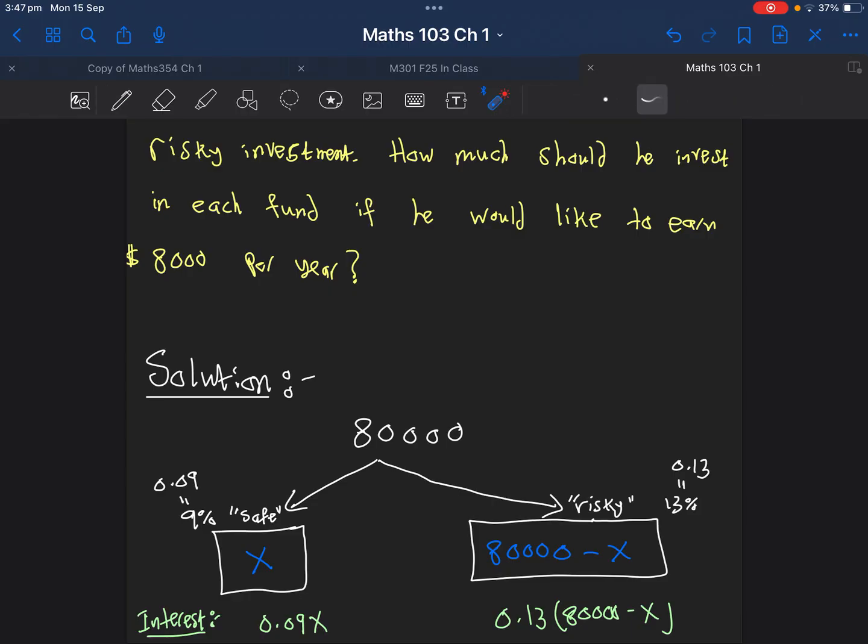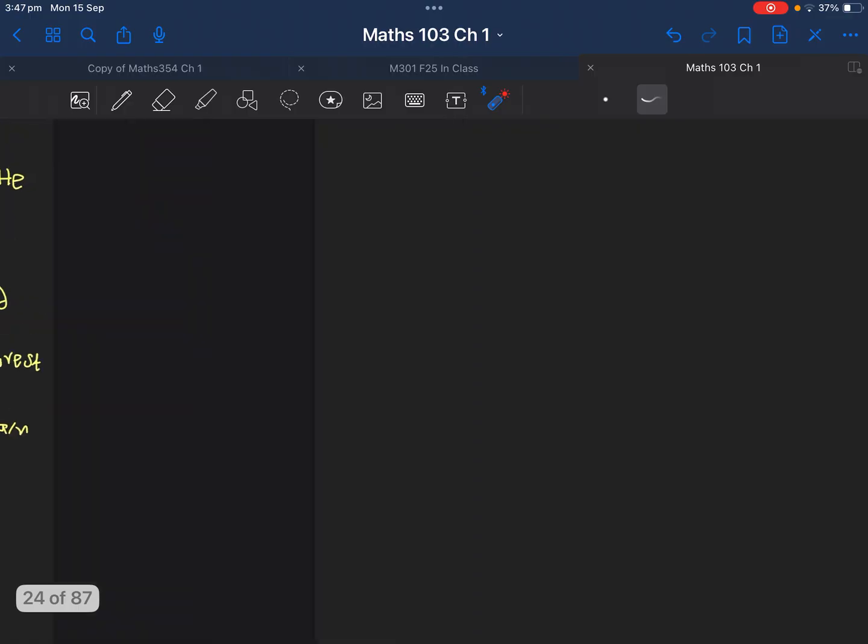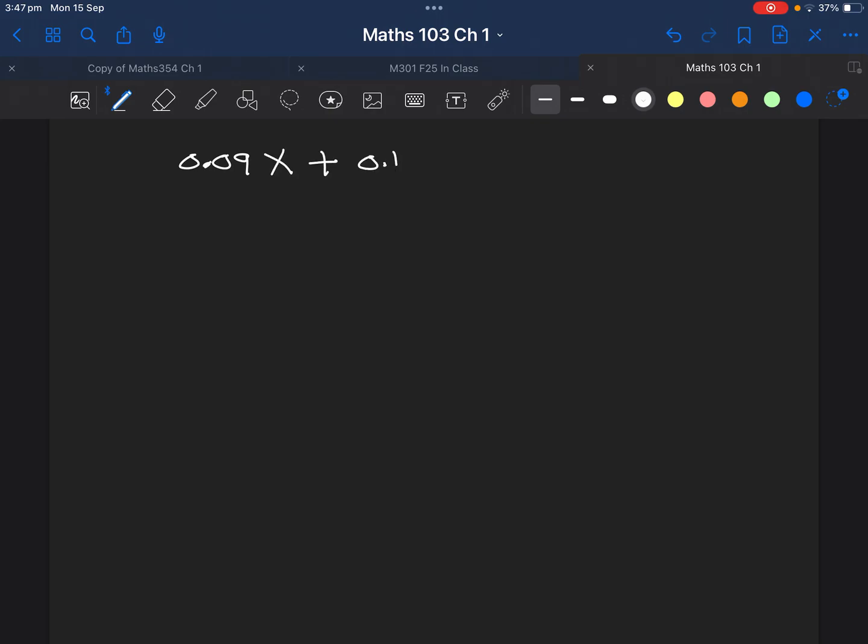According to the question, he would like that all this to be equal to 8,000. So if we add this plus this, we should get 8,000 per year. What we have so far is 0.09X plus 0.13 times 80,000 minus X equals 8,000.